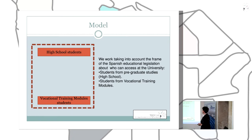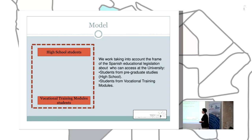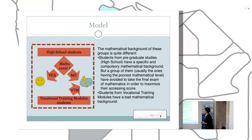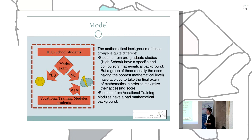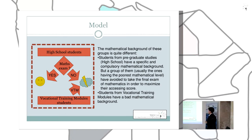We are working within the frame of the Spanish educational legislation. The students who come to university are students from pre-graduate studies, high school, and students from vocational training modules. The mathematical background of each group is really different. Students from high school have a specific compulsory mathematical background, but a group of them — usually those with the highest mathematical level — can avoid taking the mathematics examination before going to university, because they want to maximize their score for university access. Students from vocational training modules follow a different mathematical program.